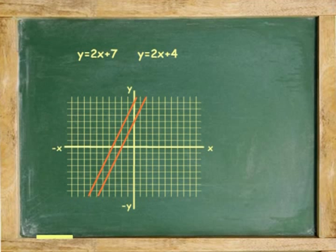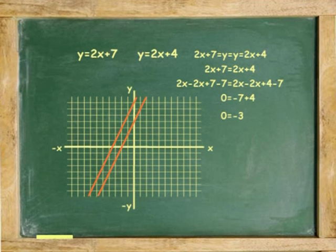Because y equals y, substitute. 2x plus 7 equals 2x plus 4. Subtract both sides by 2x and 7. 2x minus 2x equals negative 7 plus 4.